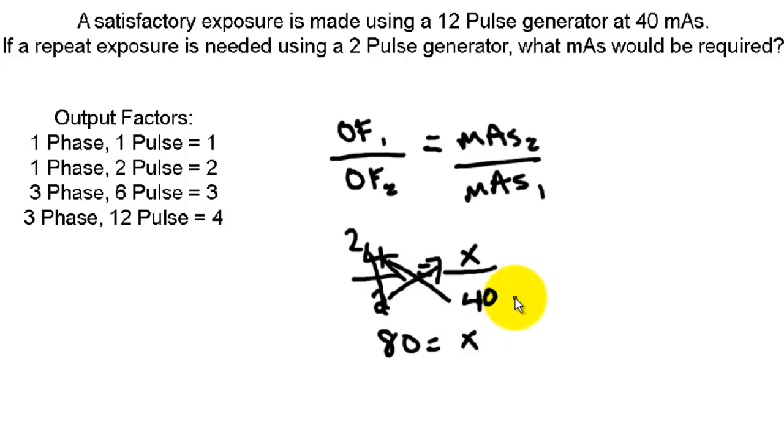So 80 mAs would be needed, and let's just look at it in retrospect here. We went from a higher efficiency generator, 12 pulse at 40 mAs to a lower efficiency generator. So basically, our output factors went from a 4 down to a 2. In other words, it got divided in half, so we would have to double our mAs if it's inversely proportional. That's what we did. We went from 40 mAs to 80 mAs.